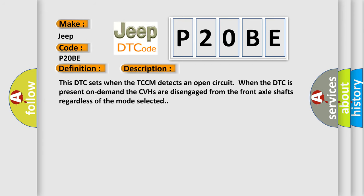And now this is a short description of this DTC code. This DTC sets when the TCCM detects an open circuit. When the DTC is present on demand, the CVHs are disengaged from the front axle shafts regardless of the mode selected.